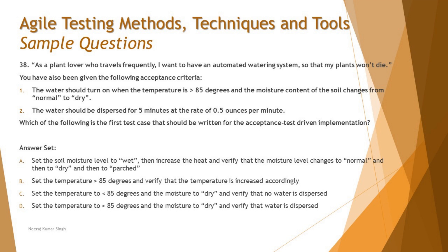The scenario says: as a plant lover who travels frequently, I want to have an automated watering system so that my plants won't die. That's the user story provided to you. You have also been given the following acceptance criteria: number one, the water shouldn't turn on when the temperature is greater than 85 degrees and the moisture content of the soil changes from normal to dry.